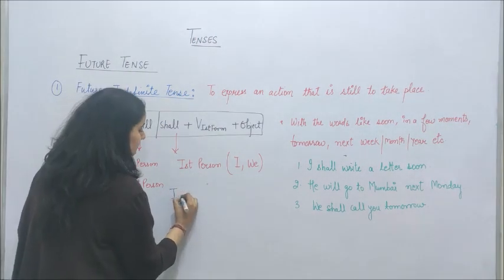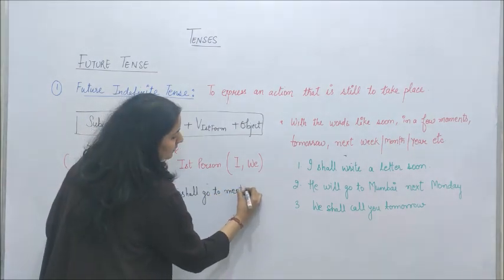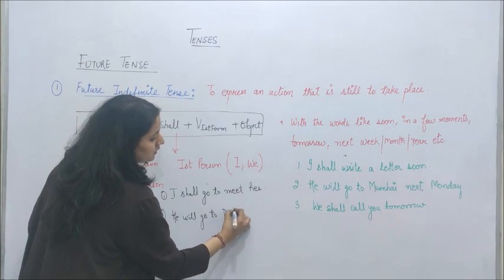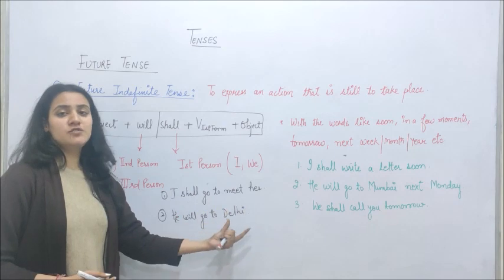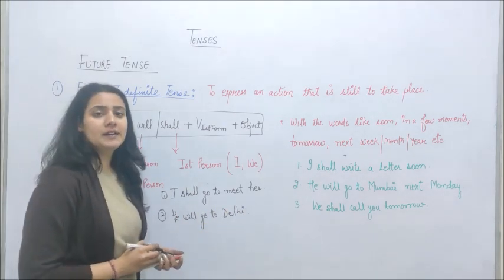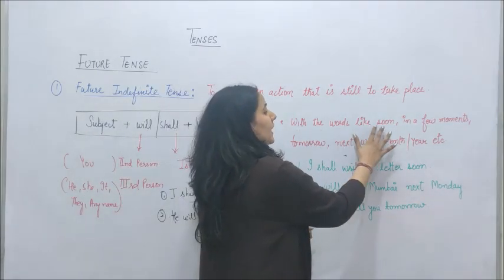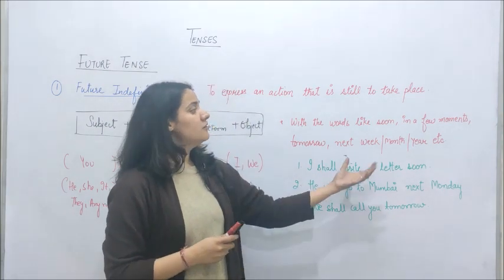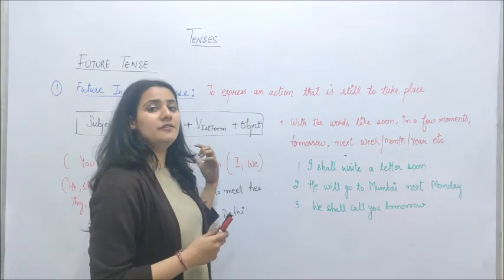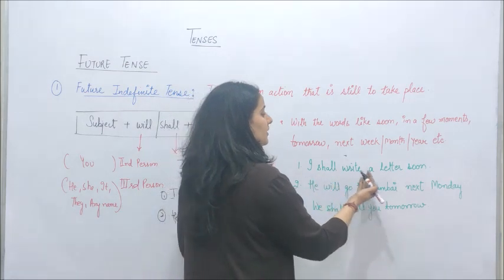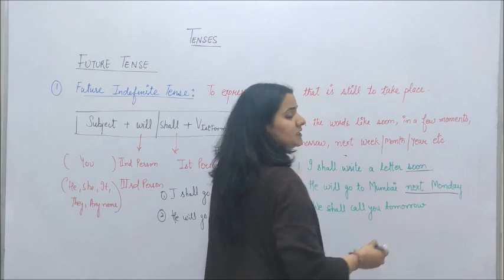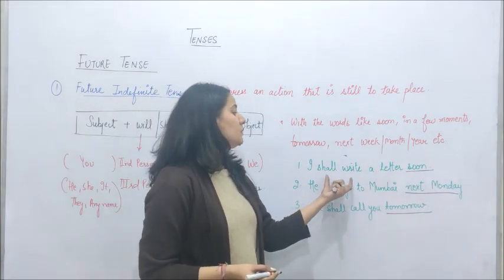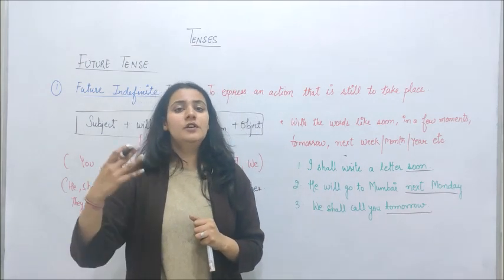Some examples in this format: 'I shall go to meet her' — example one. 'He will go to deal' — example two. This is the simple formation of a sentence in future indefinite tense. Now, some uses: future indefinite tense is used with time words like soon, in a few moments, tomorrow, next week, next month, next year. When such words that give a future time reference appear in a sentence, we always use future indefinite tense with them. For example: 'I shall write a letter soon', 'He will go to Mumbai next Monday', 'We shall call you tomorrow.'